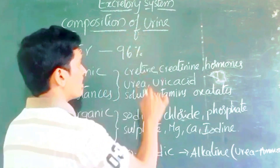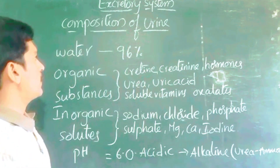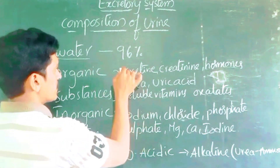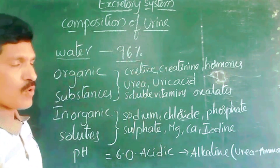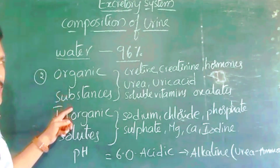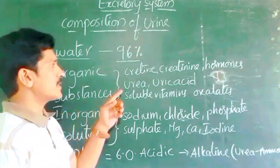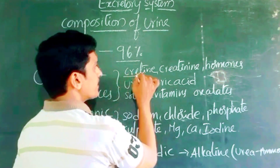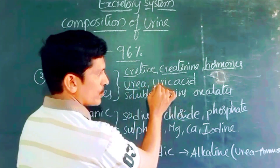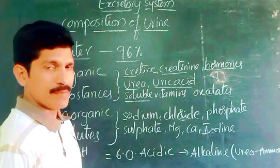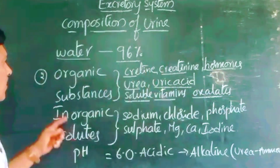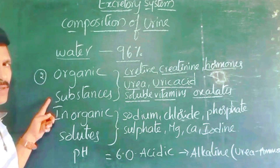What are the components present in the urine itself? You can see that the water content in the urine is 96% — 96% of the urine is water. The second important component is organic substances. A few are given here: creatine, creatinine, hormones and urea, uric acid, water-soluble vitamins, and oxalates. These are the organic substances present in the urine.